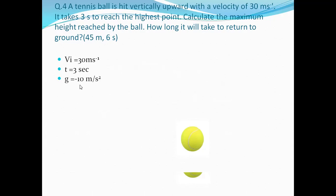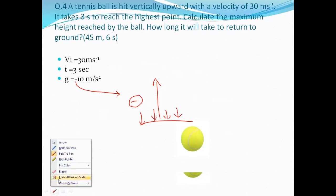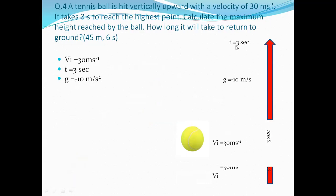The given data: VI = 30 m/s, T = 3 seconds, and g = -10 m/s² (negative because the ball moves against gravity, upward against the earth's gravitational pull). Whenever a body moves upward against gravity, acceleration due to gravity is taken as negative.